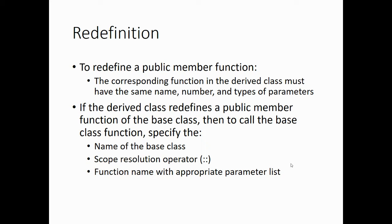To redefine a public member function, the corresponding function in the derived class needs to have the same name, number, and type of parameters — the same signature — but it's going to behave differently in the derived class. If the derived class redefines a public member function of the base class, then to call the base class function you need to specify the name of the base class, use the scope resolution operator, and give the function name with the appropriate parameter list. The scope resolution operator — those two colons — resolves what scope we're calling something from.